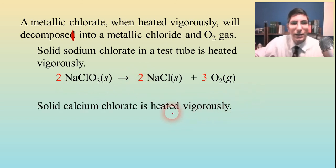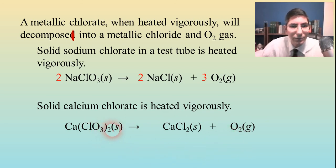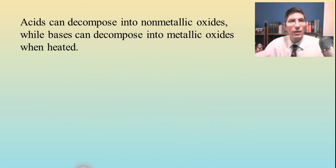Solid calcium chlorate is heated vigorously. It's the same type of process. Write calcium chlorate—don't forget the subscript and parentheses because the charges don't cancel out. We're going to get a metallic chloride, calcium chloride, CaCl2, and oxygen. This is not balanced. We have six oxygens on the left side, three times two, so if we balance the oxygens here, now we have a balanced equation. That's metallic chlorates heated—you need to know that.